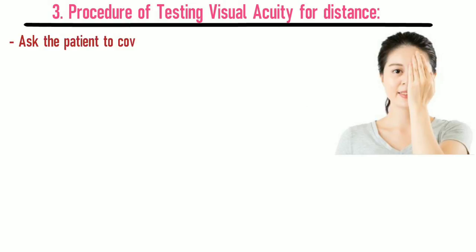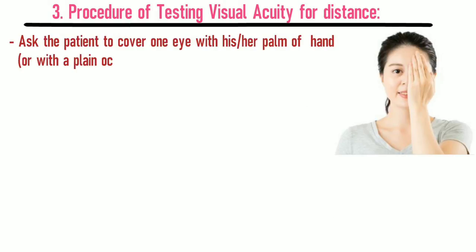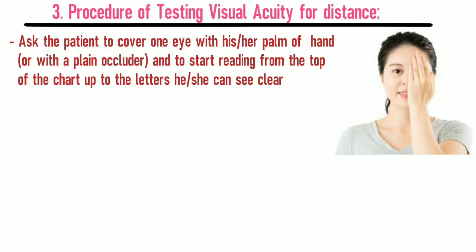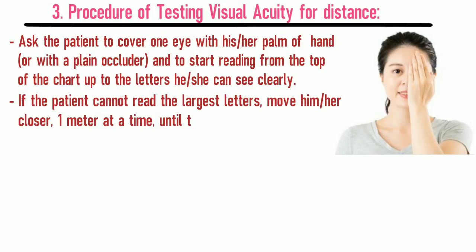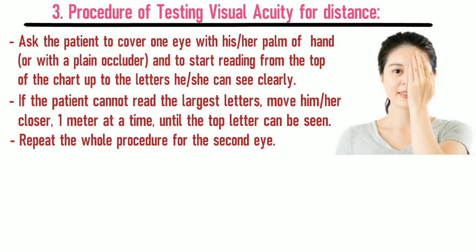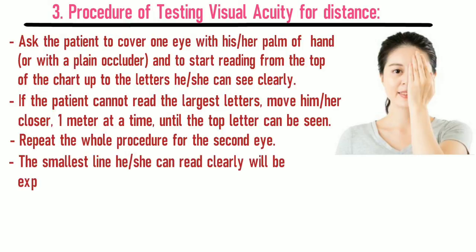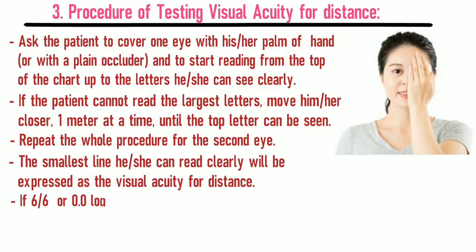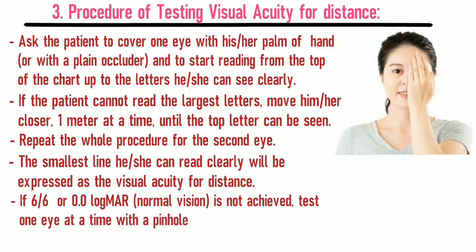Procedure of testing visual acuity for distance: ask the patient to cover one eye with the palm of their hand or with a plane occluder and start reading from the top of the chart up to the letters they can see clearly. If the patient cannot read the largest letters, move them closer one meter at a time until the top letters can be seen. Repeat the whole procedure for the second eye. If 6/6 or 0.0 LogMAR normal vision is not achieved, test one eye at a time with a pinhole occluder.